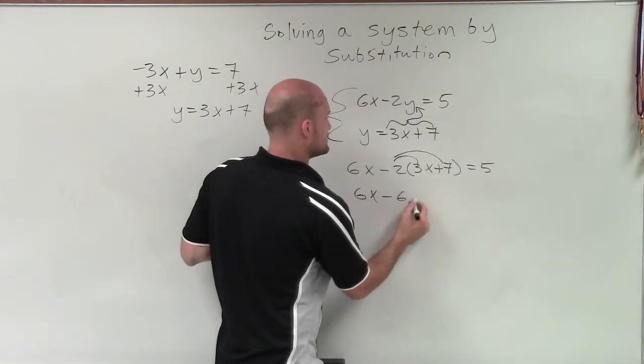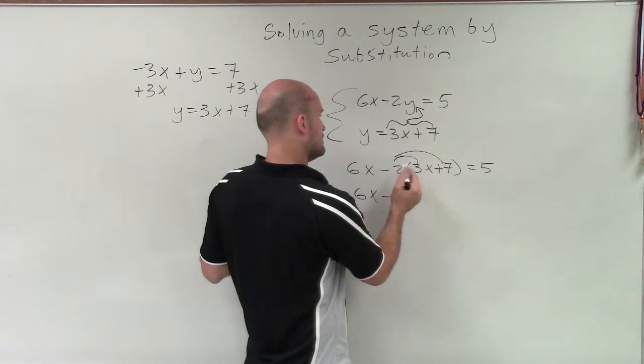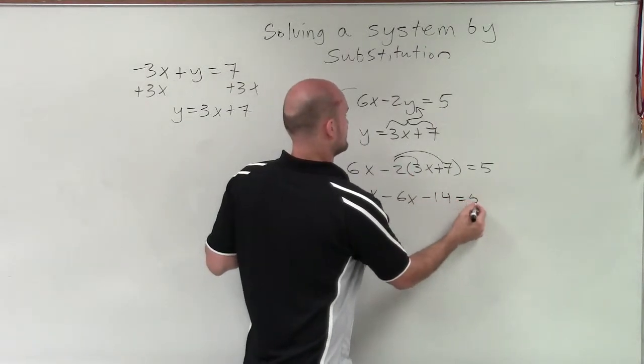So I get 6x minus 6x, and then minus 14 equals 5.